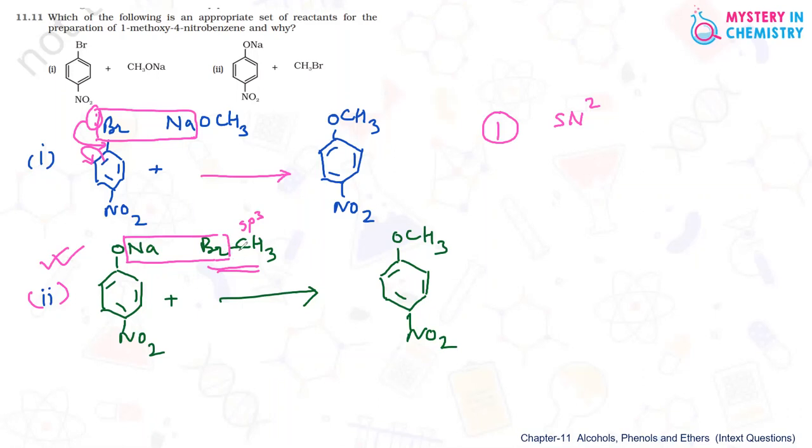Whereas here it is sp3 carbon. Bond is single bond. It is not having any double bond character, and breaking of this bond is quite easy. So by both these factors we can say that the second is the choice for making 1-methoxy-4-nitrobenzene and not the first one.